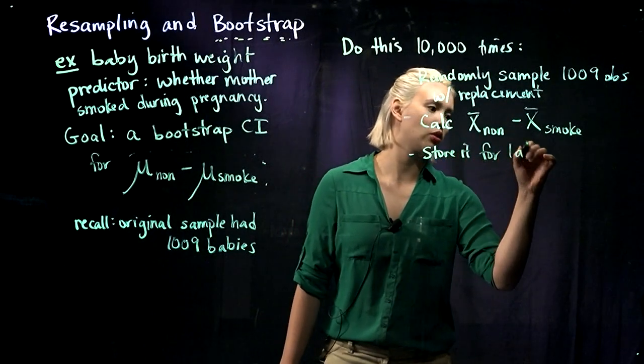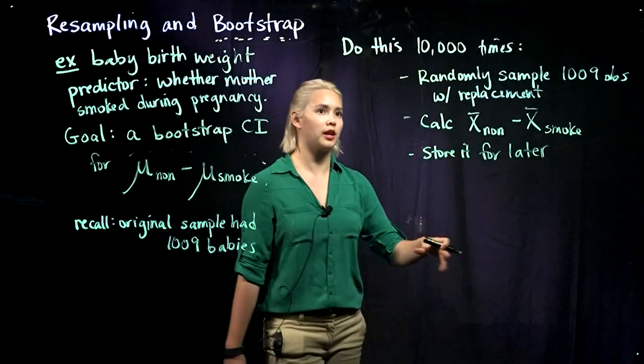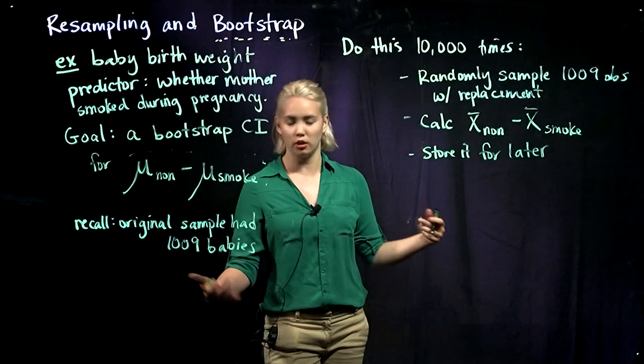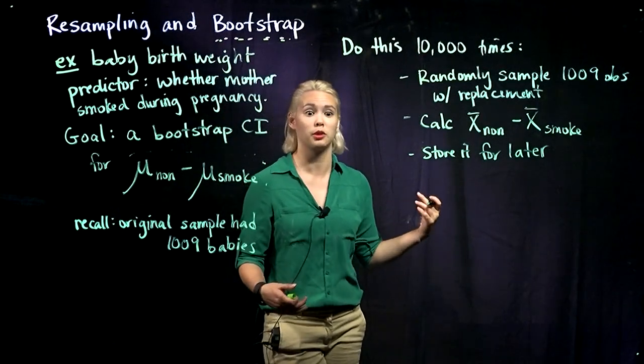We store that difference in means for later. And then once we've done that 10,000 or a huge number of times, we can look at our bootstrap distribution.